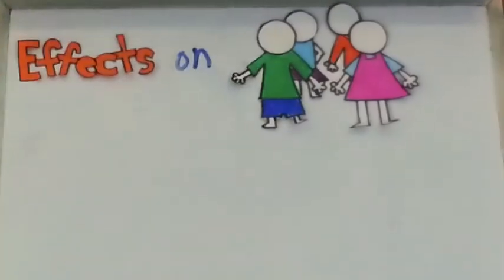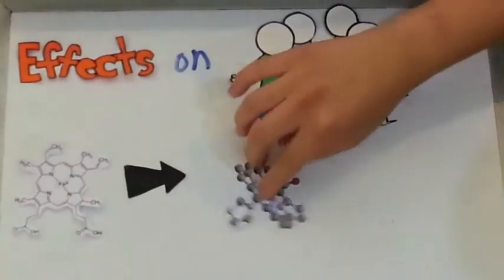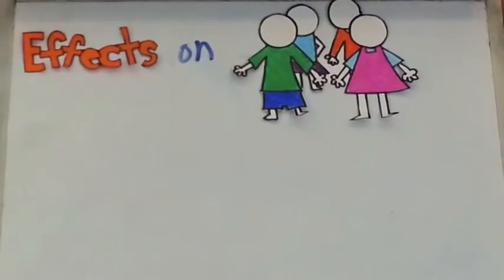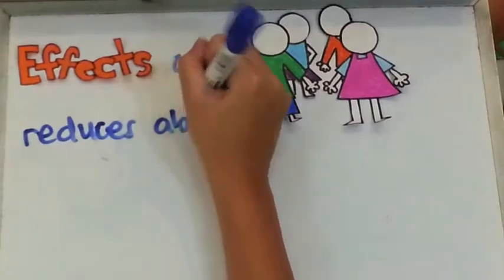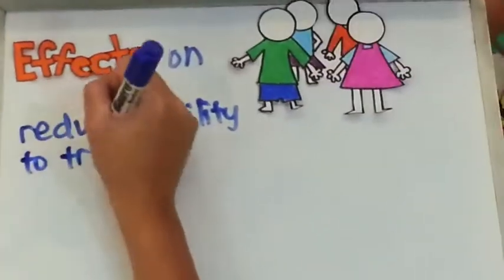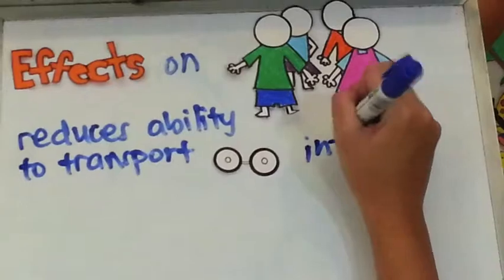What effects does carbon monoxide have on humans? Carbon monoxide reacts with hemoglobin to form carboxyhemoglobin which reduces the ability of transporting oxygen to the rest of the body.